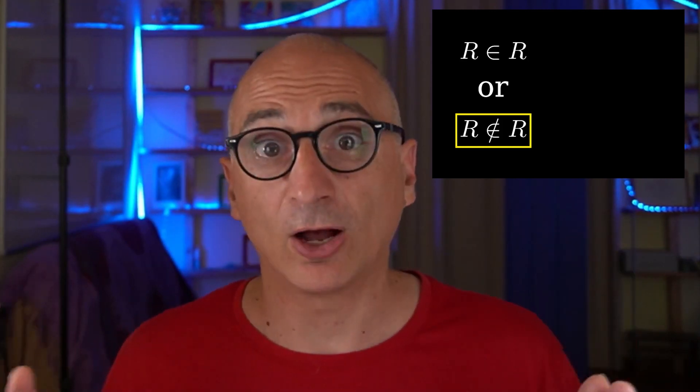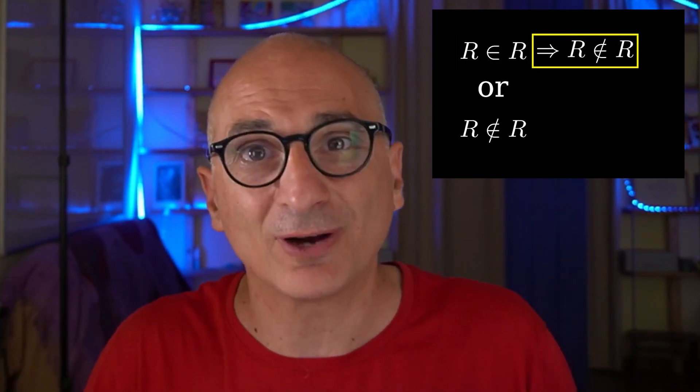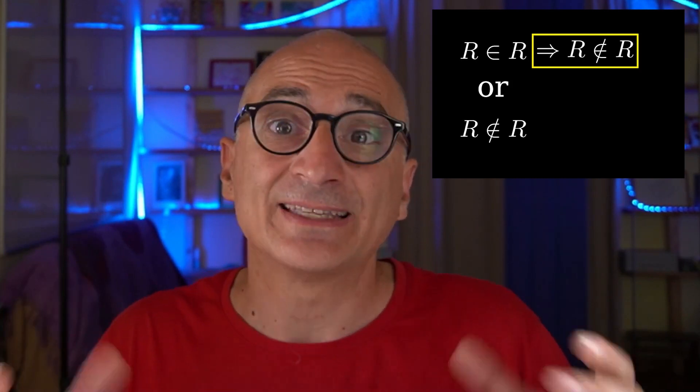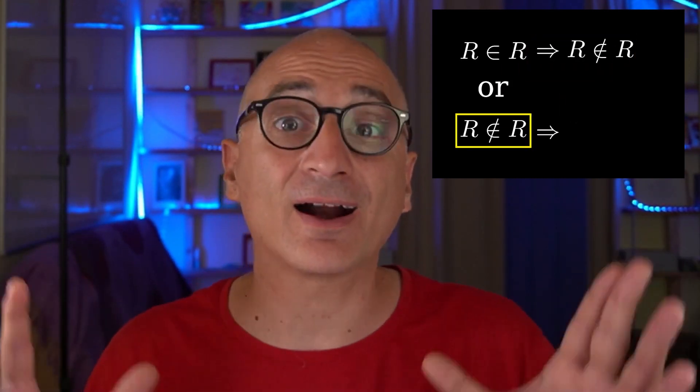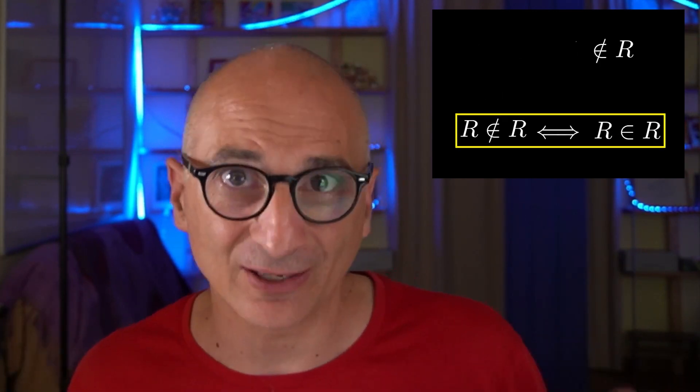Russell, who was a genius in logic from a young age, discovered a major flaw in the set R. There are two possibilities: either R belongs to itself, or R does not belong to itself. If R is not an element of R, then according to the definition of R, R should belong to R, because in R we put exactly those sets that do not belong to themselves. But if R does belong to R, then R should not belong to R, because in R we don't want any set that belongs to itself. So: R belongs to R if and only if R does not belong to R — clearly contradictory and paradoxical.